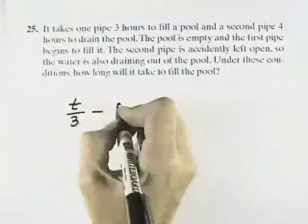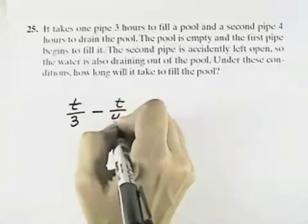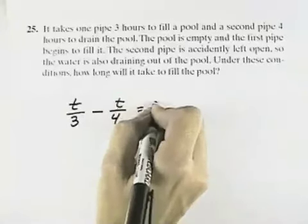But we're taking away, or draining it, at T over four, meaning the whole pool would be drained after four hours. It would all be gone. We want that to fill one pool.